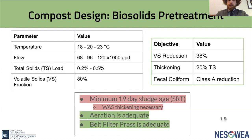When we looked at the current facilities, while the aeration is adequate in the digesters for mixing and the belt press is adequate for thickening to 20% total solids, the volatile solids will not be reduced enough in the low 6- to 12-day sludge retention time. We will need at least a 19-day sludge retention time to provide sufficient volatile solids reduction. To achieve this, instead of adding more digester volume, we are proposing to thicken the waste-activated sludge to reduce flows.